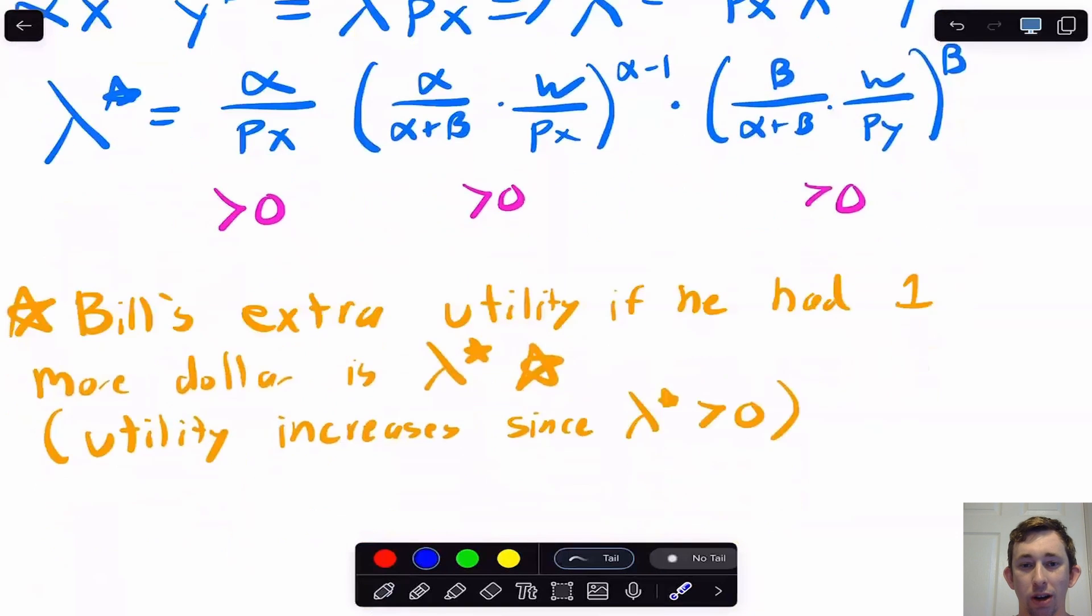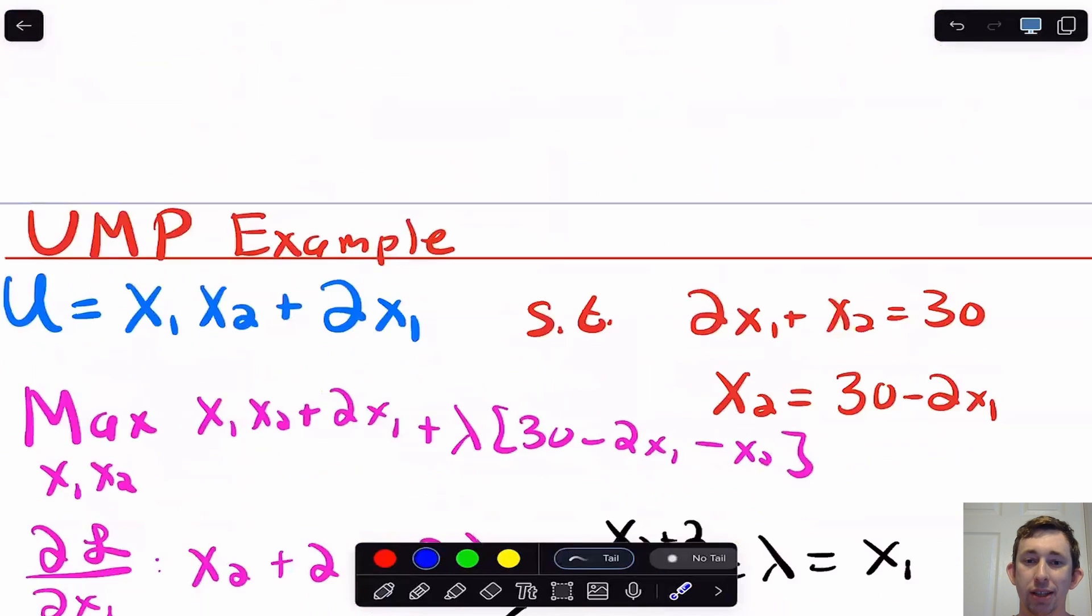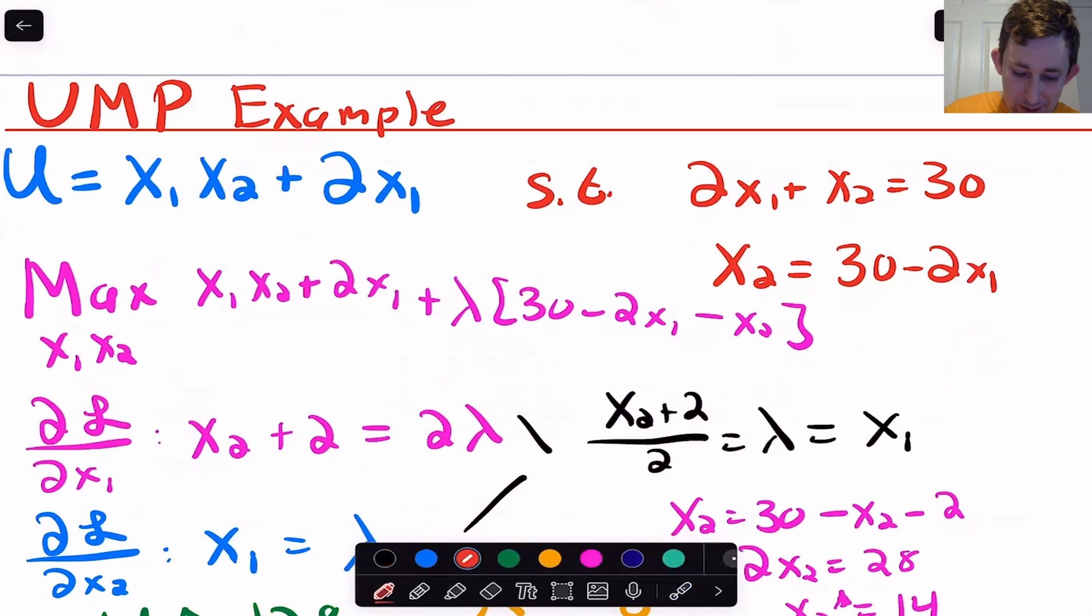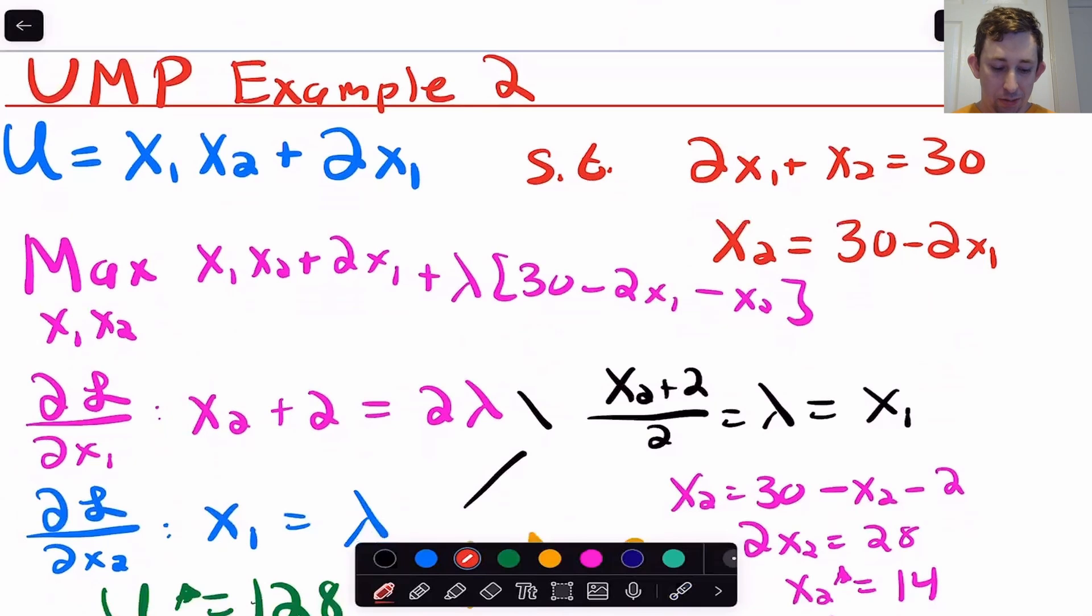Now let's do a more concrete example, which may really help tie this all together. Maybe I'll call this UMP example two, where I've got a utility that looks very similar to a problem that we did in the last video, where maybe there's two goods. My utility is x1 x2 plus two x2, maybe my budget is $30, the price of x2 is one, and the price of x1 is two.